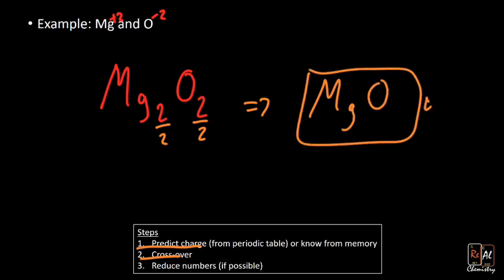Having two of each is also neutral, but the numbers are bigger than they need to be. So we divide both by two, giving us MgO. It's like reducing a fraction — two of each is neutral, but one magnesium at +2 and one oxygen at -2 is also neutral, so MgO is the correct formula.